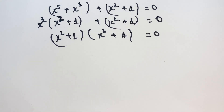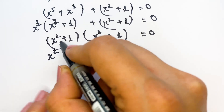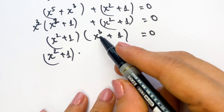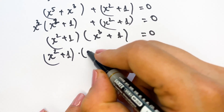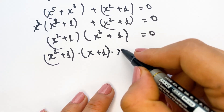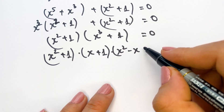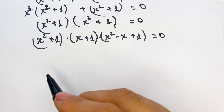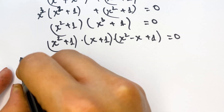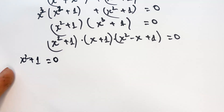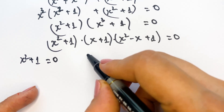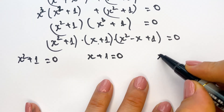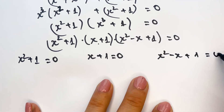Using the sum of cubes identity, x³ + 1 = (x + 1)(x² - x + 1). So the equation becomes (x² + 1)(x + 1)(x² - x + 1) = 0. From this we get three equations: x² + 1 = 0, x + 1 = 0, and x² - x + 1 = 0.